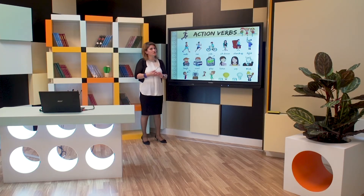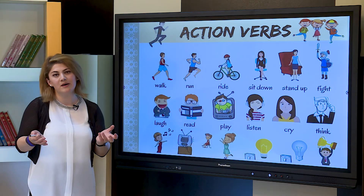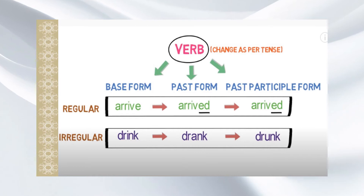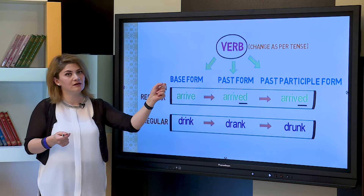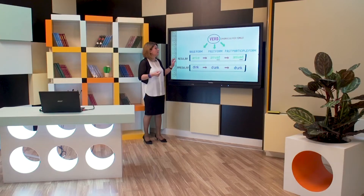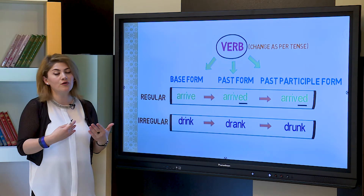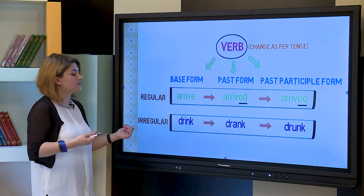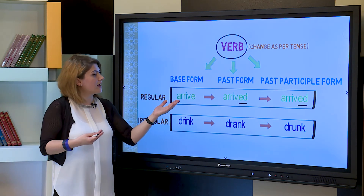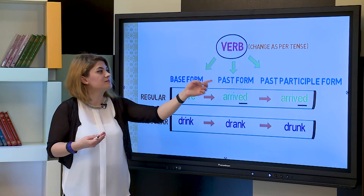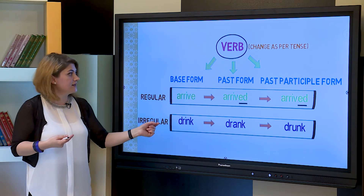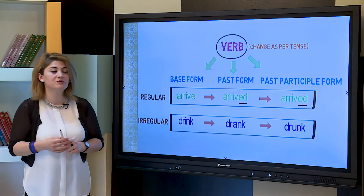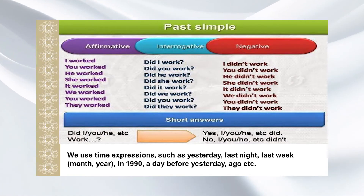These verbs are divided into two parts in the past simple: regular and irregular verbs. A verb has three forms: base form, past form, and past participle form. When we add the suffix -ed at the end of the verb, it's called a regular verb. When we change the root of the verb, it's called an irregular verb. For example, regular verb: arrive — past form arrived, past participle arrived. Irregular verb: base form drink — past form drank, past participle drunk.